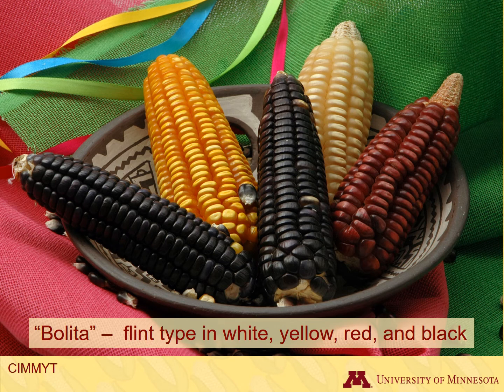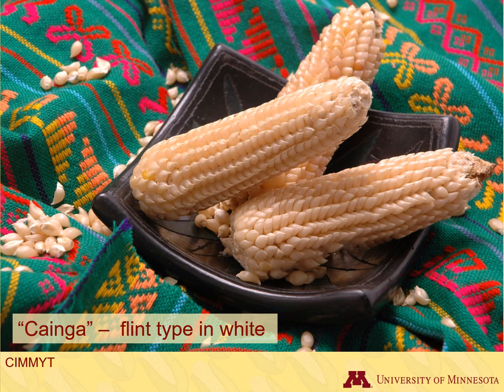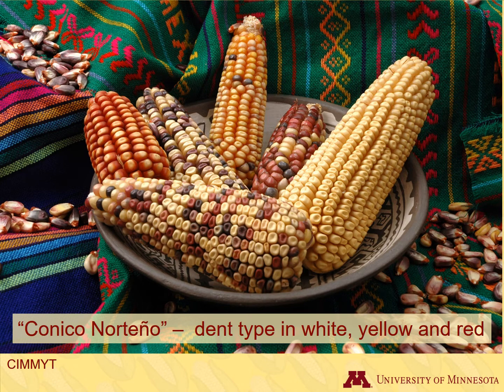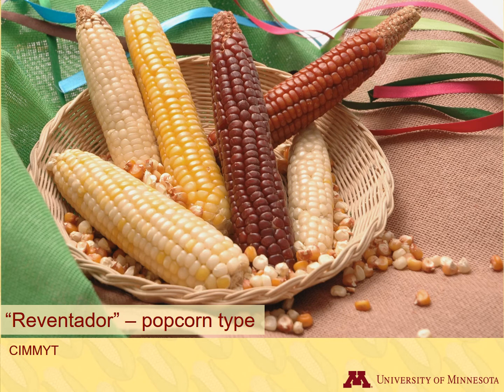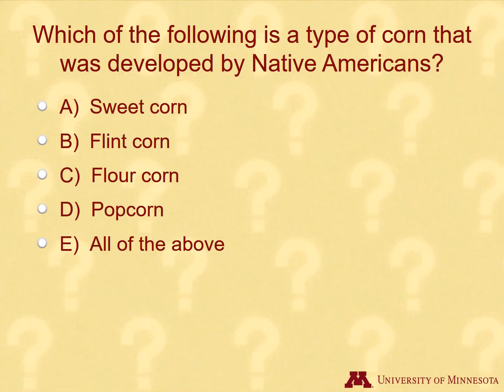Bolita is a landrace from Mexico — it is a flint corn that comes in white, yellow, red, and black. The landrace Cainga is a flint type that comes in white from Brazil; look at the differently shaped kernels. Caneco Norteño is a landrace from Mexico, a dent type that comes in white, yellow, and red, with cone-shaped ears. Pepetilla is a flour type corn in red, yellow, white, and black — note the interesting shape of the kernels. Reventador is a popcorn from Mexico; its kernels don't look that different from our popcorn today.